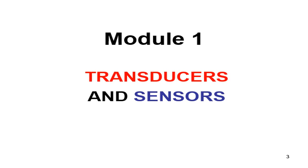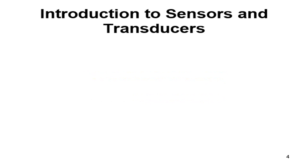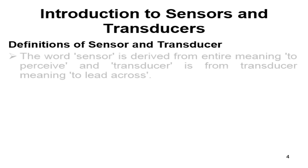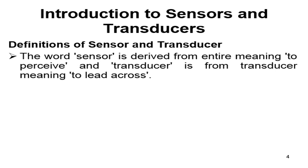First, we need to know the definition of a sensor. The word 'Sensor' is derived from a meaning 'to perceive,' and 'Transducer' comes from a meaning 'to lead across.' A sensor is able to sense or receive something, while a transducer takes what is received and leads it further. Sensor takes something in; transducer takes it further — that is how we can define them in a simple way.